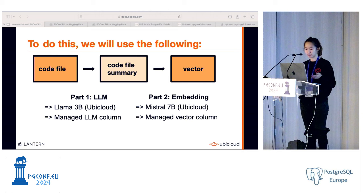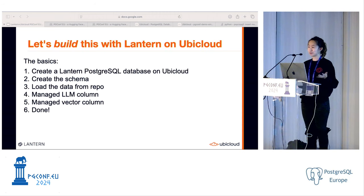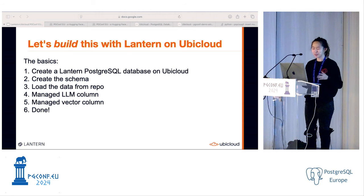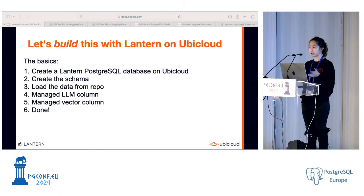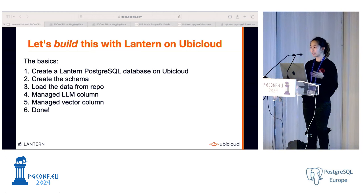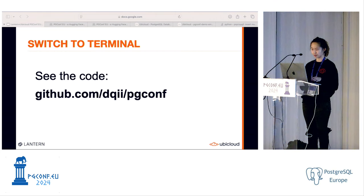We have one intermediate step: we first generate a summary of the file with an LLM, then convert that to a vector. This condenses the information to a shorter form that makes similarity search easier. Specifically, we'll use the LLaMA 3 billion model on UbiCloud and the Mistral 7B embedding model on UbiCloud. Lantern will handle automatically generating the LLM column and the vector column on your behalf. Let's build this with Lantern on UbiCloud.